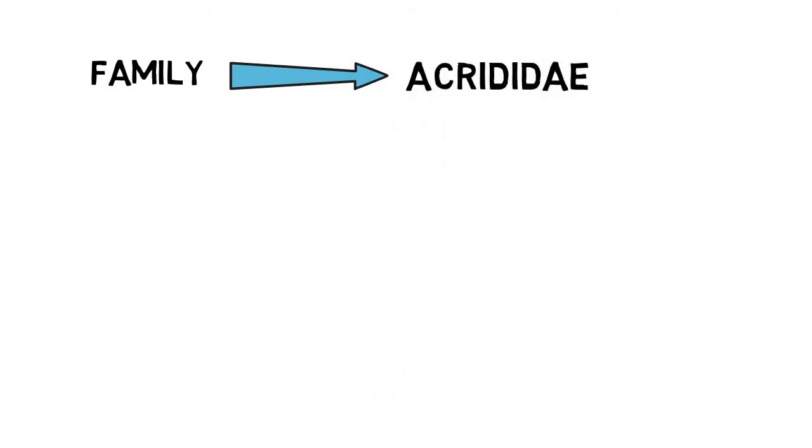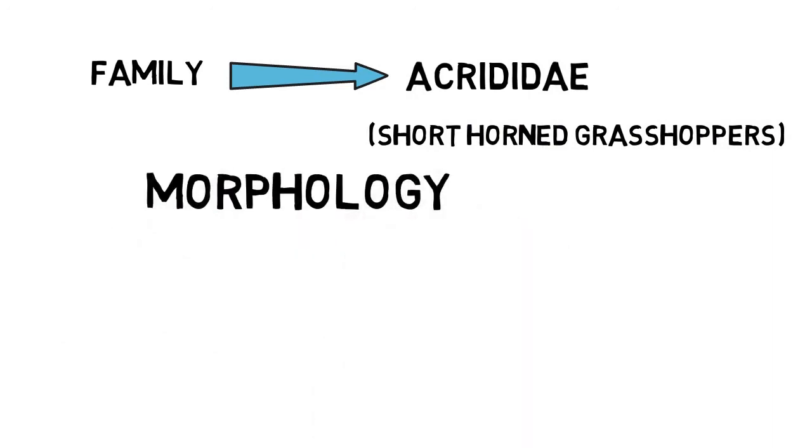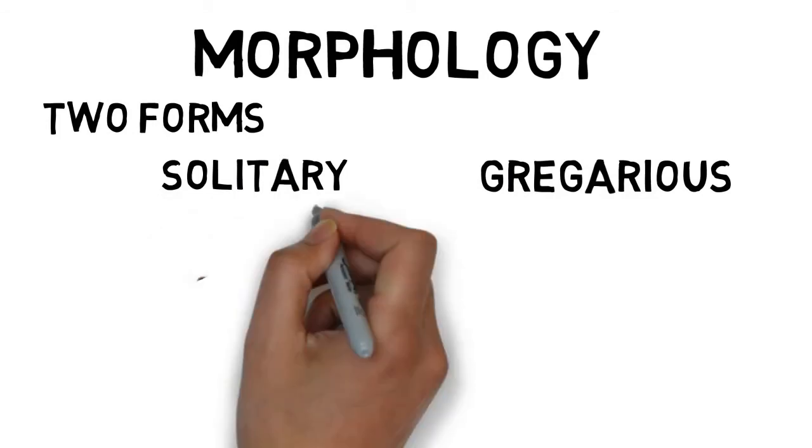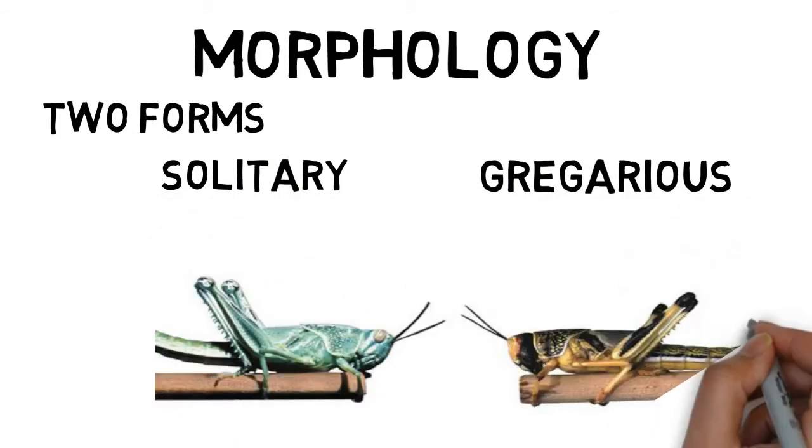It is the order of grasshoppers and mole crickets. It belongs to the family Acrididae, which is also called the family of short-horned grasshoppers. Now let's talk about its morphology. It has two forms: solitary form and gregarious form. Solitary form of both sexes is green to brown in color, reflecting the environment, and their pronota bear convex crests.